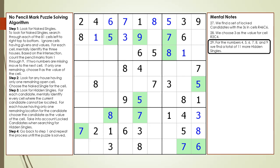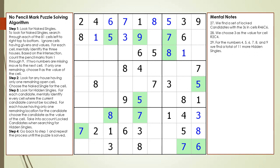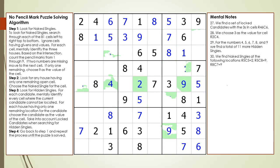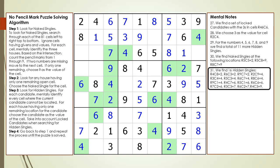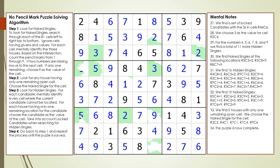For the numbers 4, 5, 6, 7, 8, and 9 we find a total of 11 hidden singles. We then repeat the process from step 1. Starting again, we find 3 more naked singles, then 16 more hidden singles, then 10 more naked singles, and finally 5 houses having only one remaining open cell to finish the puzzle.